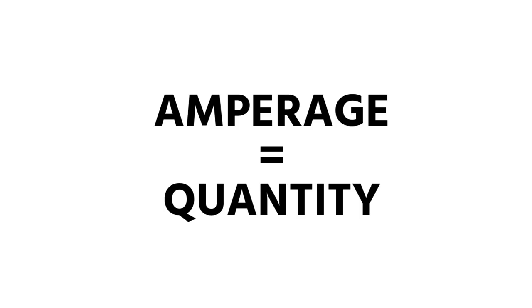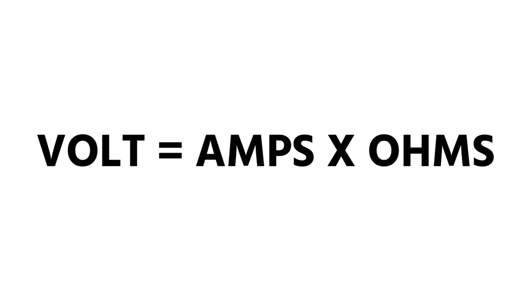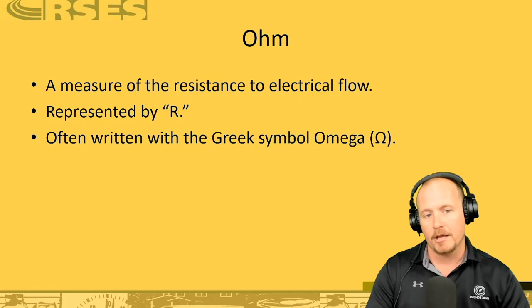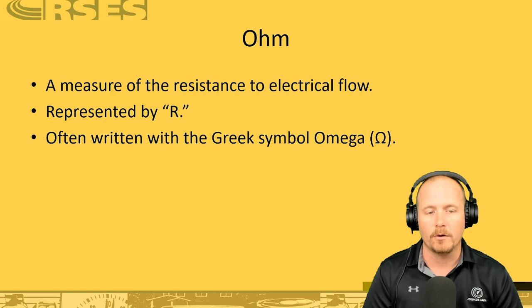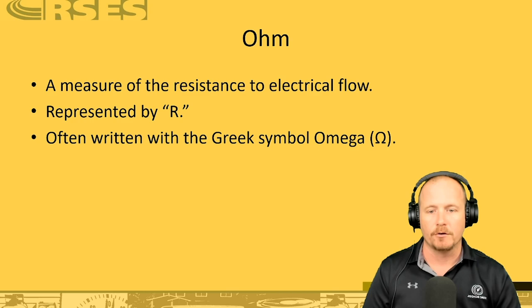Simply put: amperage is a quantity over time, and a volt is a pressure or force measurement. An ohm is simply a resistance. So when we say E equals I times R, that means volts equals amps times ohms. R is the resistance — you'll also often see ohms designated by the omega symbol. An ohm is the measure of resistance, or opposition to the flow of current in a circuit. Voltage applied to a circuit produces a current that is limited by the resistance in the circuit.